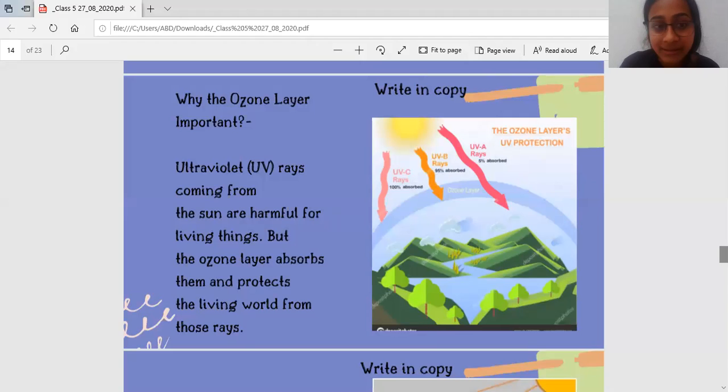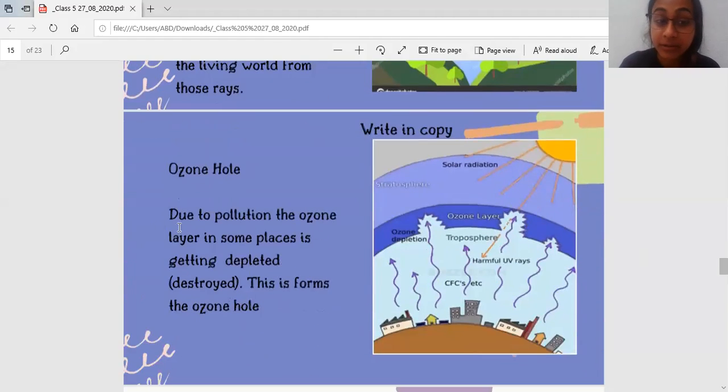Now, in this ozone layer, because of a lot of pollution, there is lots of pollution, especially with cars, or the pollution between the AC and the refrigerator. Because of that pollution, the ozone layer is getting destroyed. It is getting depleted. Deplete means destroy. And because of this destruction, there is something called an ozone hole. I'll show it to you on the whiteboard.